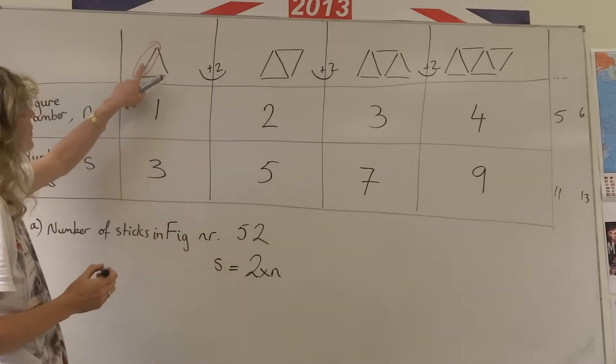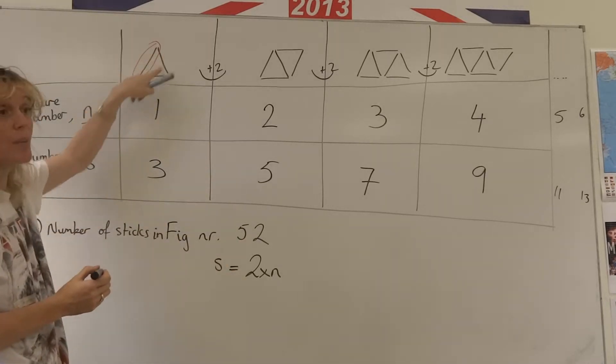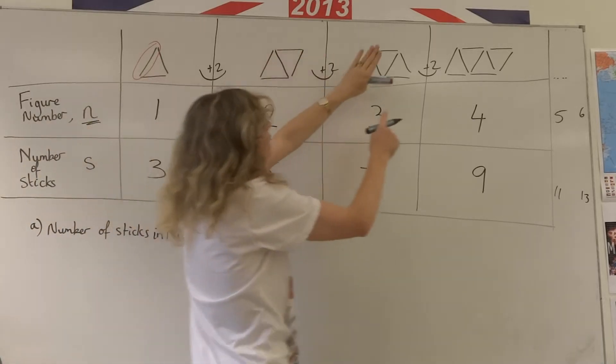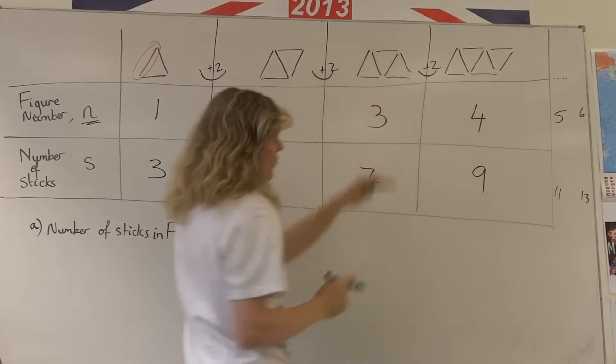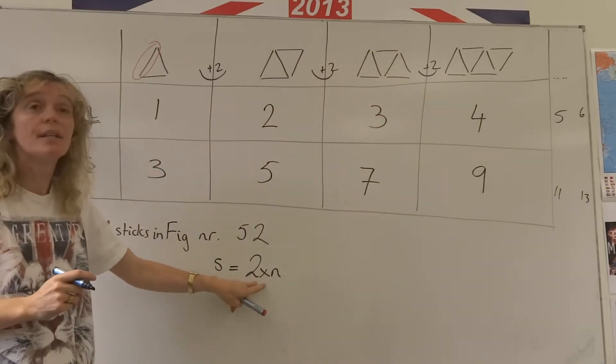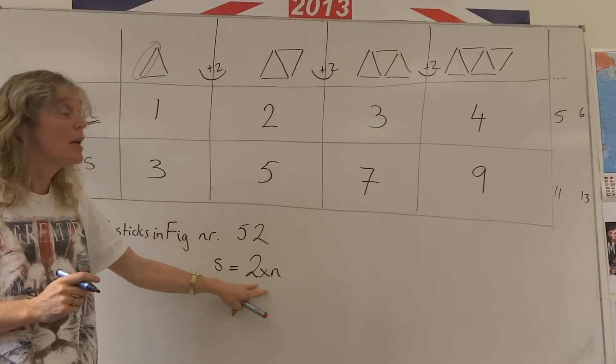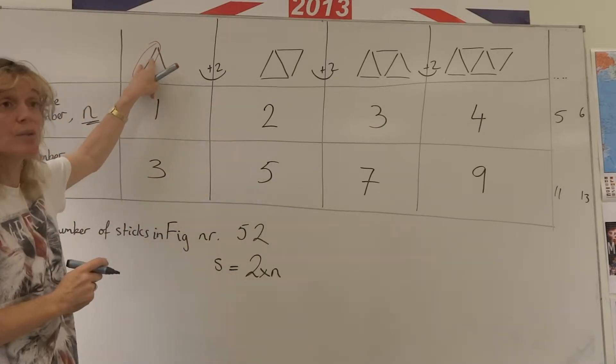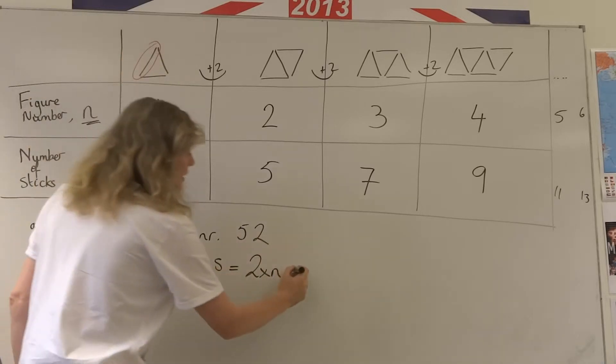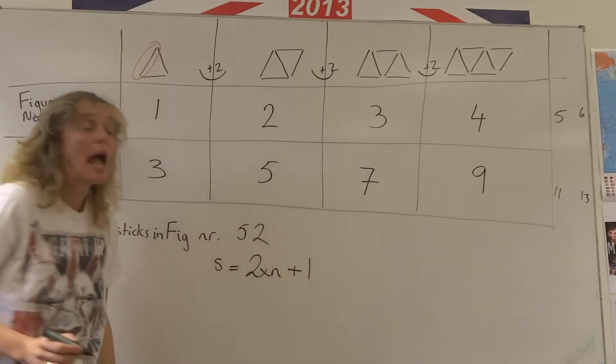And the number of sticks that we started with, we started with one here and we added two. Here we started with those and we added two. Here we started with those and we added two. So the number that we add each time is the number that goes in front of n. And the number of sticks that I started with in the very first picture before I added those two is the number that goes add one.